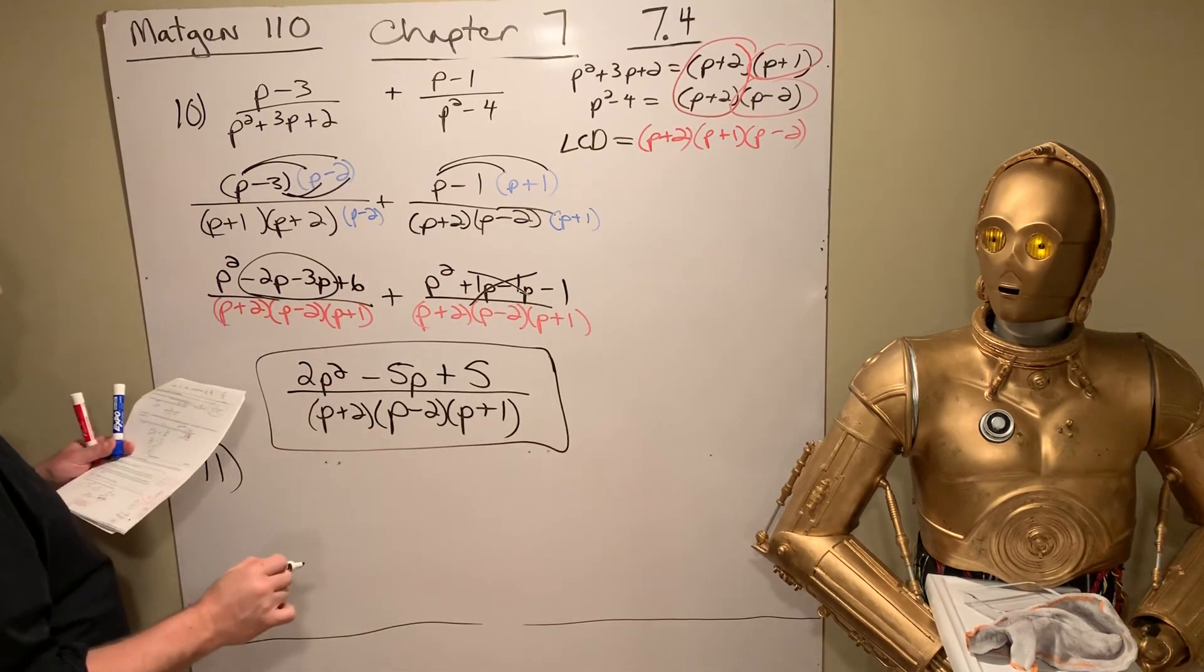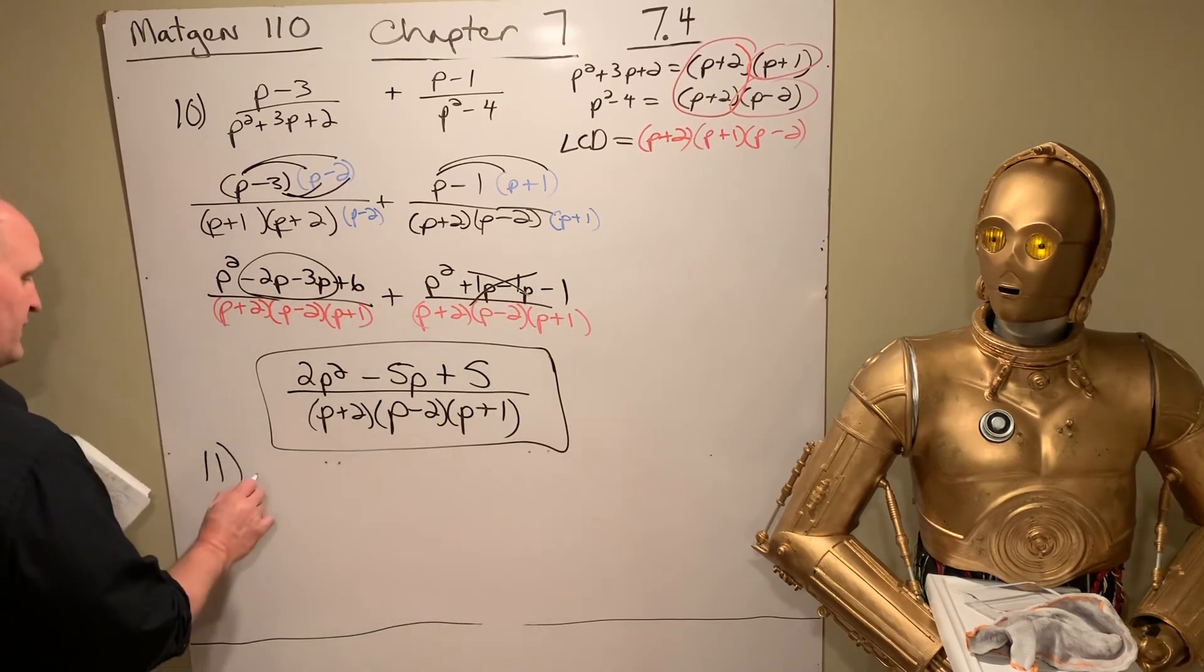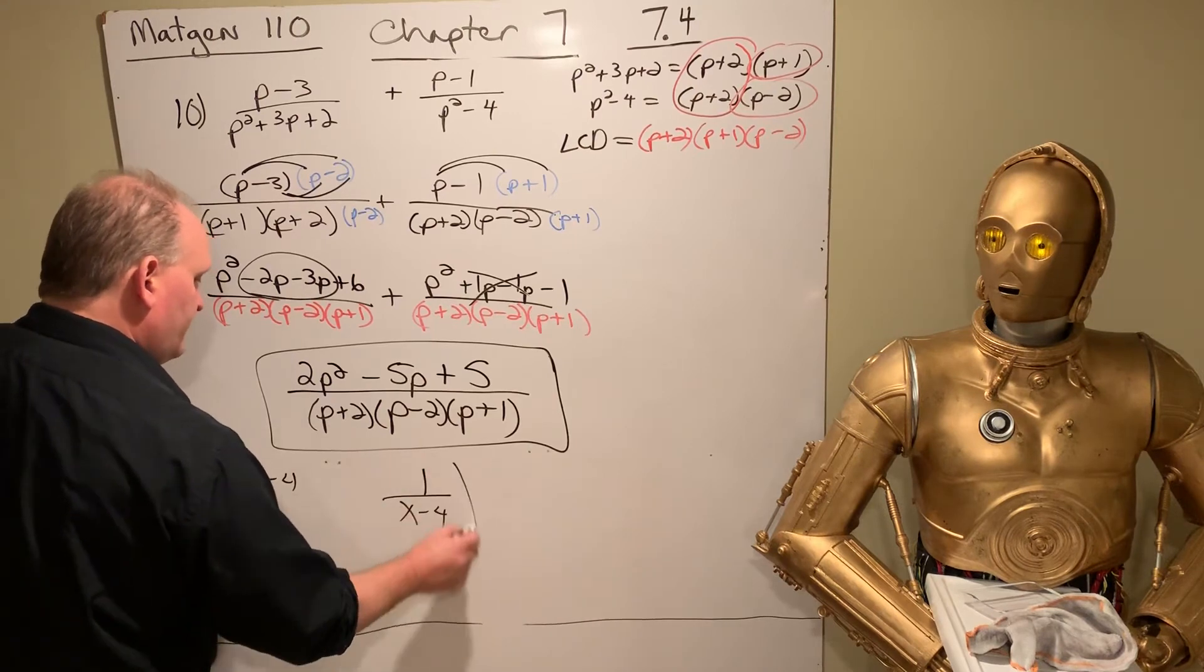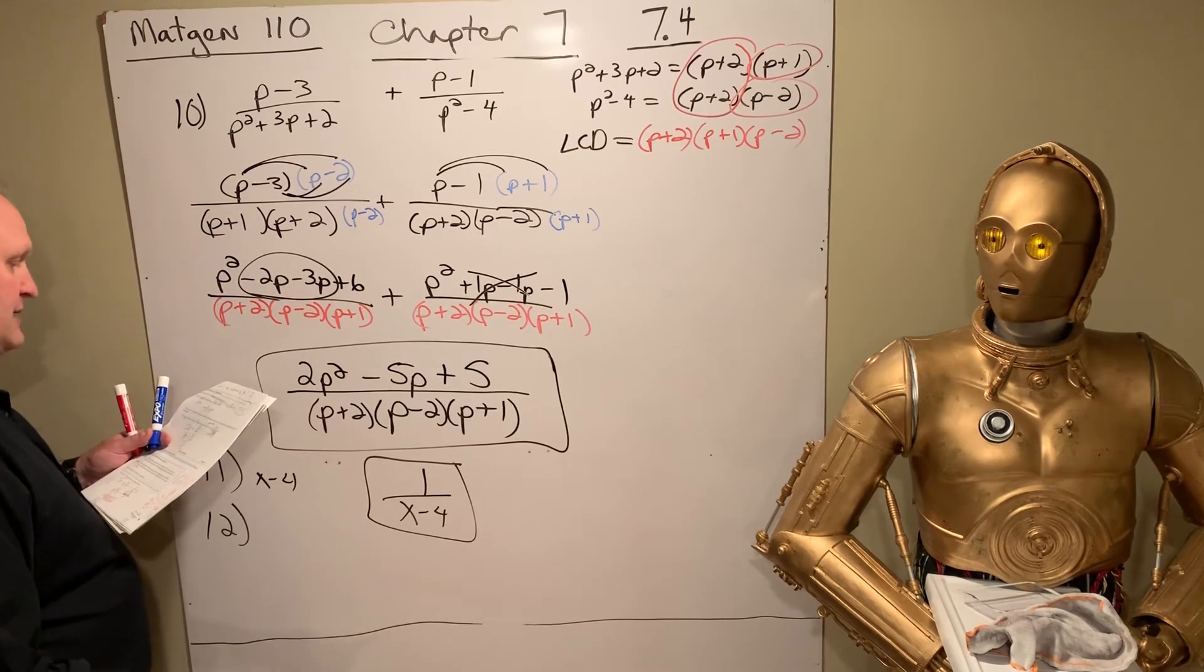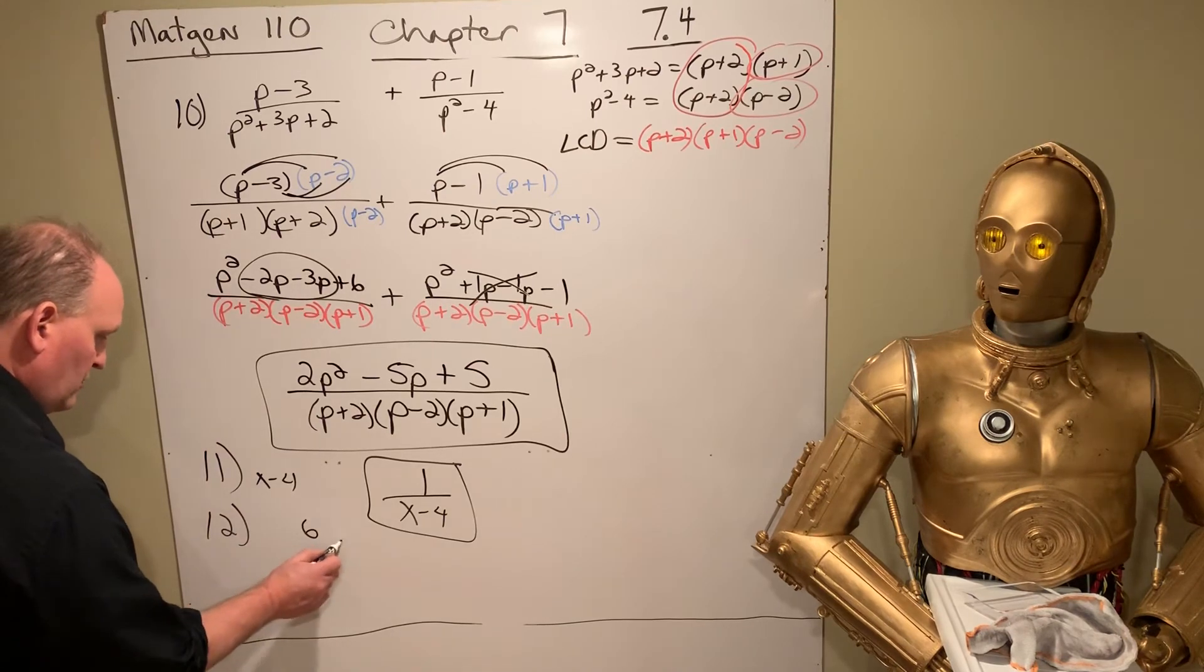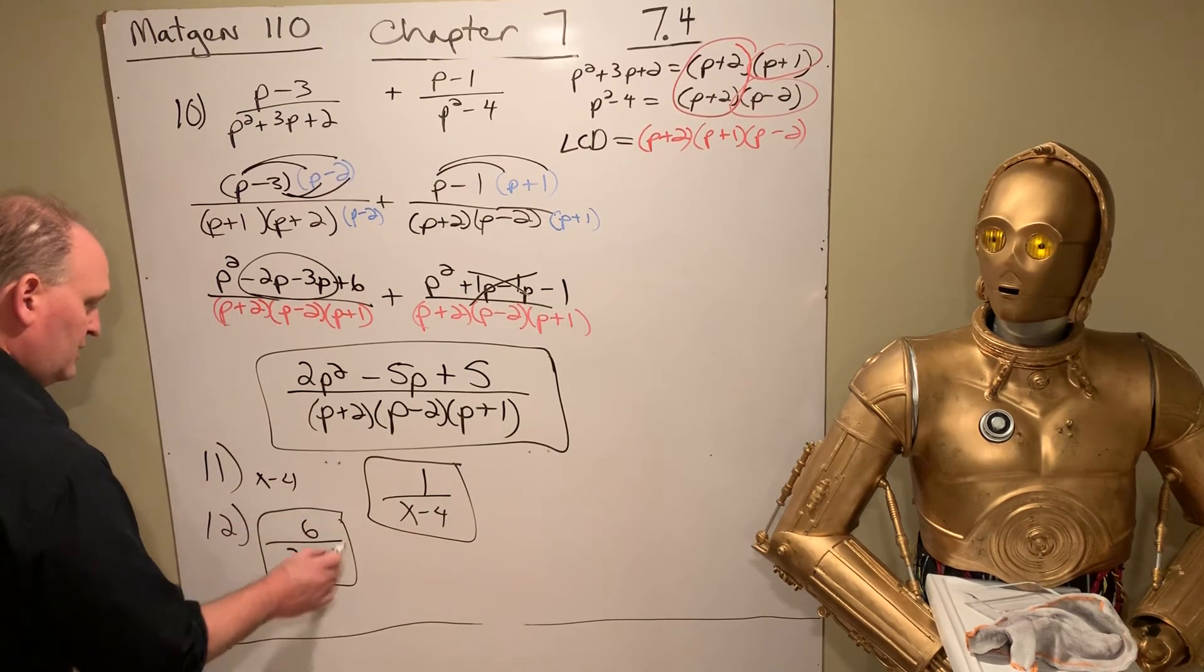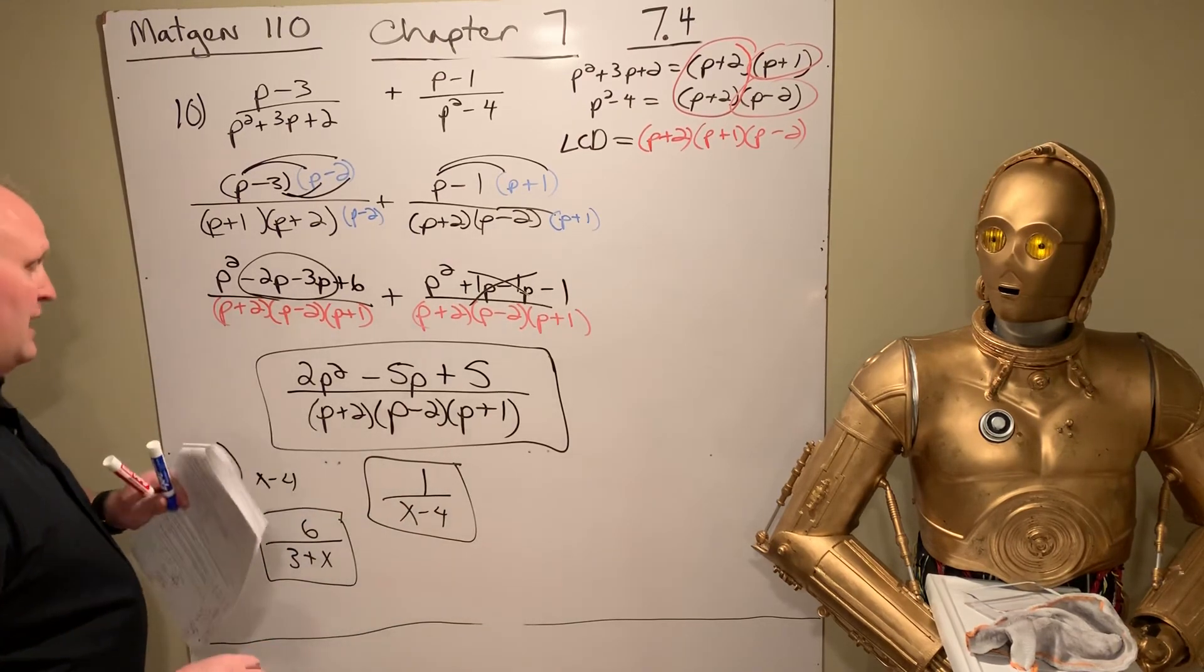Let's get 11. Write the reciprocal of the difference of a number in 4. So think the difference of a number in 4 looks like this. They want the reciprocal of that. So the answer is 1 over x minus 4. Number 12. Write the quotient of 6 and the sum of 3 and a number. So quotient means divide. So the quotient of 6 and the sum of 3 and a number. That's 3 plus x or x plus 3. Order doesn't matter with addition. It does matter with the difference of. So we need difference has to be in the correct order.